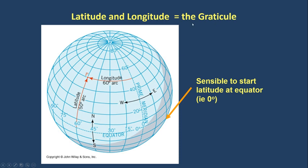When we put latitude and longitude together, this is referred to as the geographic graticule — a network of curved lines. The lines of latitude are concentric circles giving us degrees of arc moving away from the equator towards the North Pole or South Pole. It makes sense to start at the equator and call that zero degrees latitude, as that's the largest circumference for lines running east-west around the Earth. We can go up to 90 degrees north for the North Pole or 90 degrees south for the South Pole. Latitude is literally given as a distance north or south from the equator.